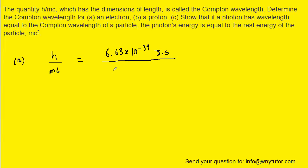And then we have to divide by the mass multiplied by the speed of light. The mass of an electron is approximately 9.11 times 10 to the minus 31 kilograms. And then the speed of light is roughly 3 times 10 to the eighth meters per second.